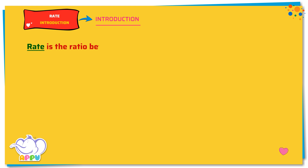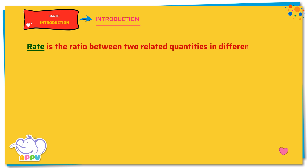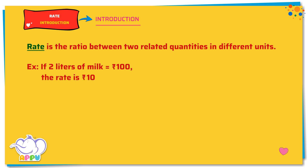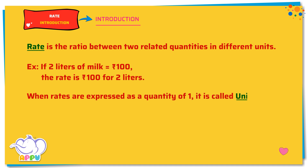A rate is the ratio between two related quantities in different units. For example, if 2 liters of milk costs 100 rupees, the rate is 100 rupees for 2 liters. When rates are expressed as a quantity of 1, it is called unit rate. So, the rate of milk per liter equals 50 rupees.